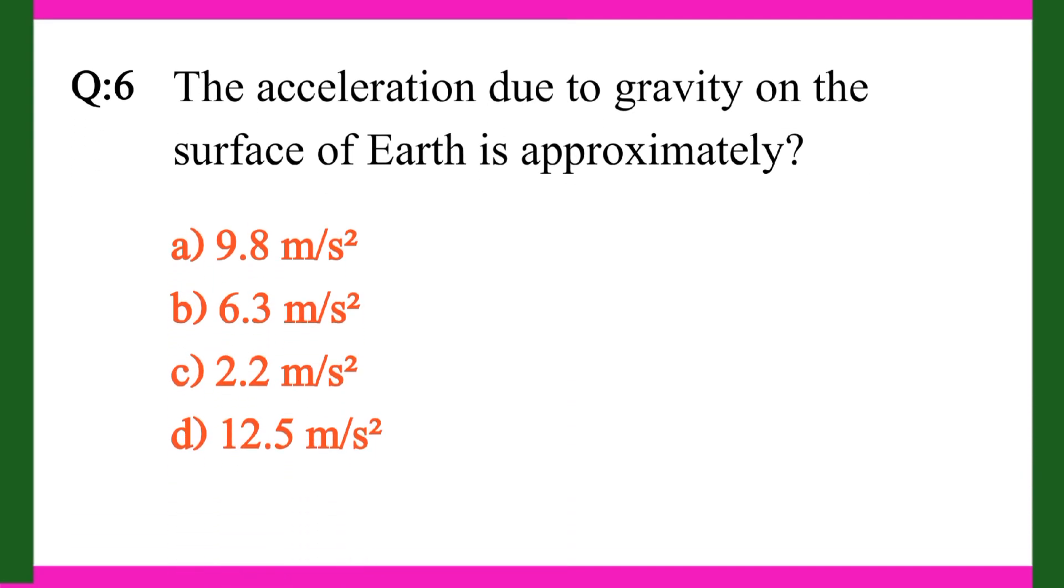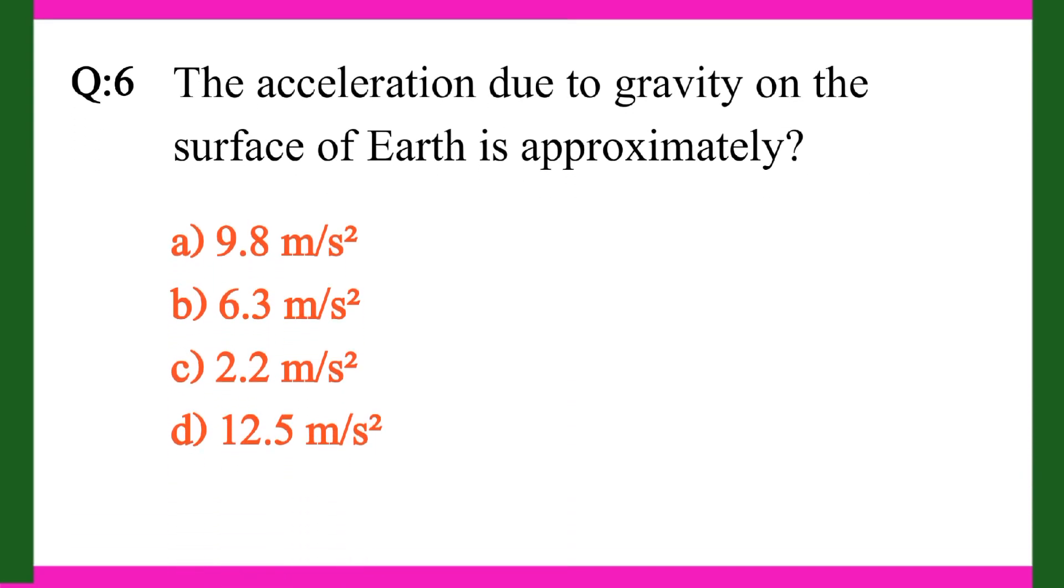Question 6. The acceleration due to gravity on the surface of earth is approximately: A. 9.8 meters per square second. B. 6.3 meters per square second. C. 2.2 meters per square second. D. 12.5 meters per square second. Right answer is A. 9.8 meters per square second.